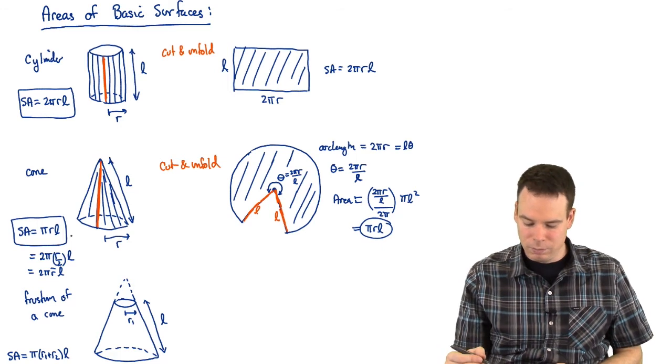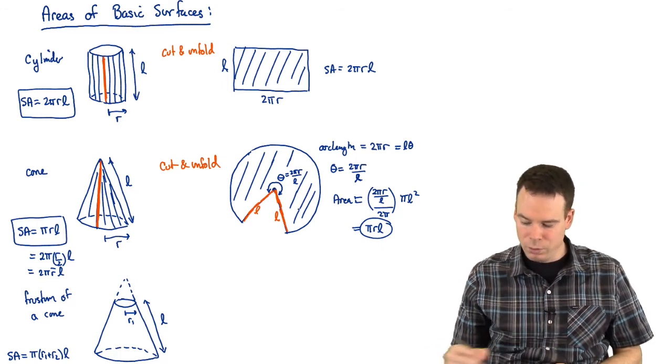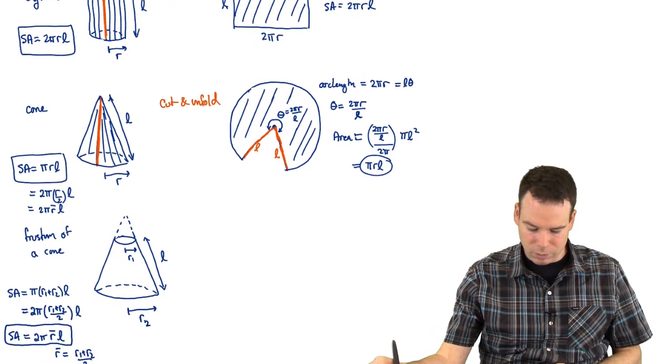So we've done our cylinder, we've verified the surface area of our cone. What about the frustum of a cone?